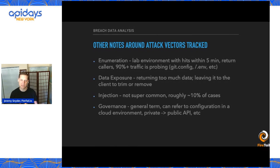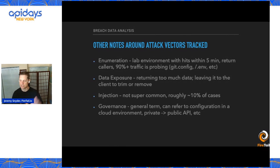Governance is a general term in our research. It refers to things like configuration changes. One of the common things we've seen is private APIs that get accidentally made public through something like a network topology change, an IP address change, or a security group change.